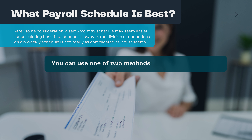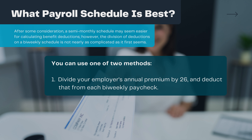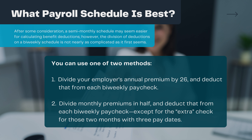You can use one of two methods. Number one: divide your employer's annual premium by 26 and deduct that from each bi-weekly paycheck. Number two: divide monthly premiums in half and deduct that from each bi-weekly paycheck, except for the extra check for those two months with three pay dates. Though weekly works similarly, having to run payroll half as often still places bi-weekly at an overall advantage.